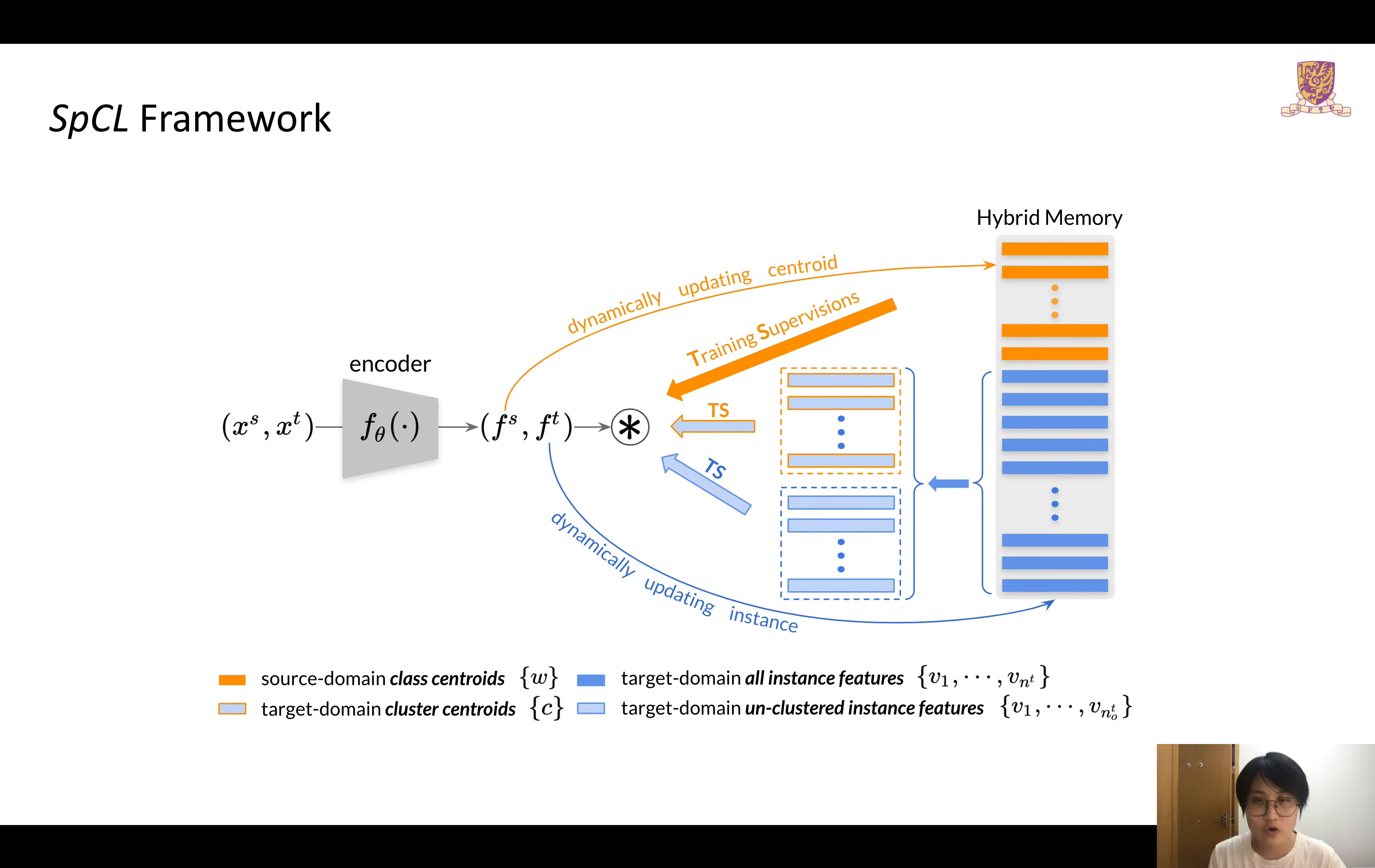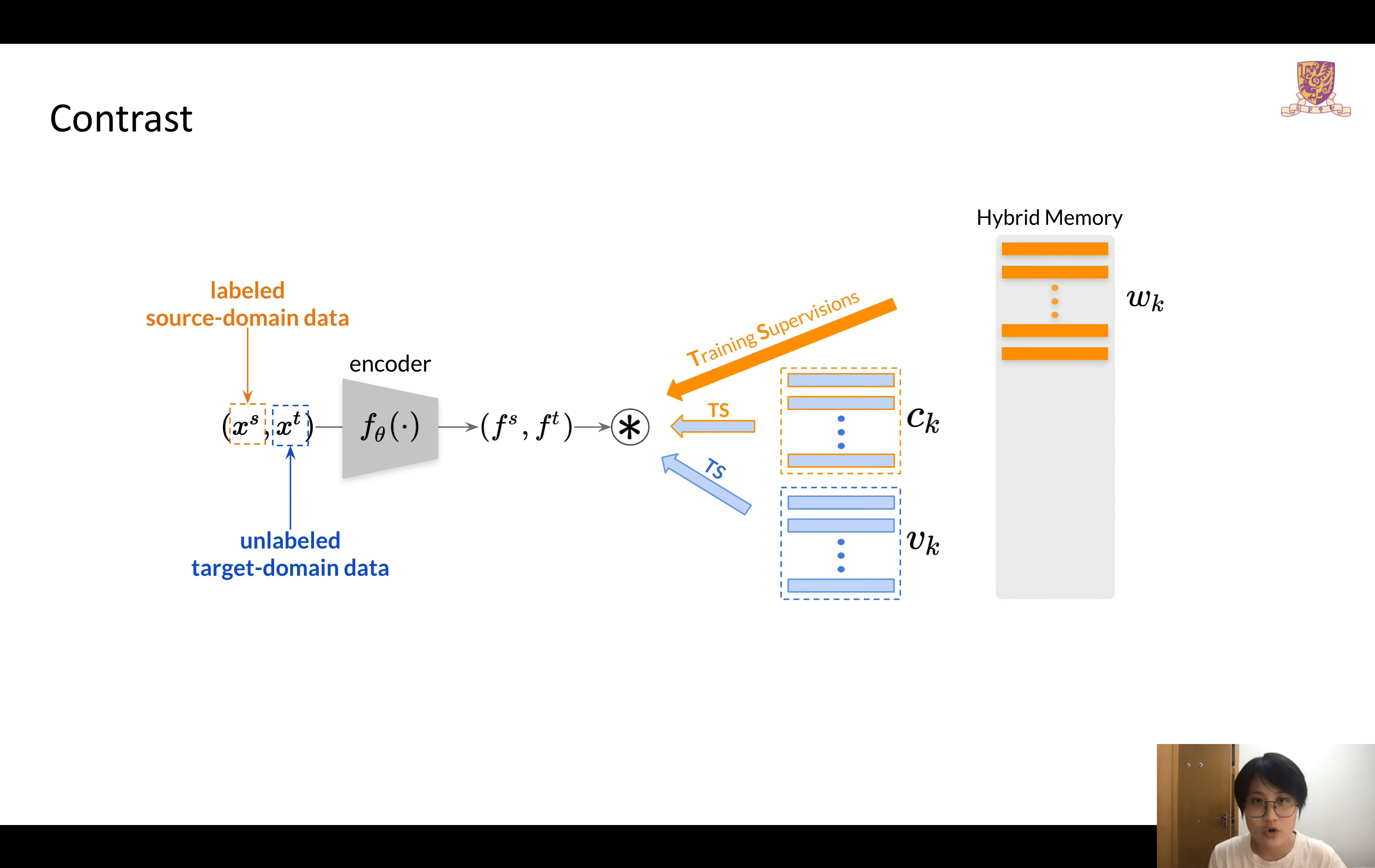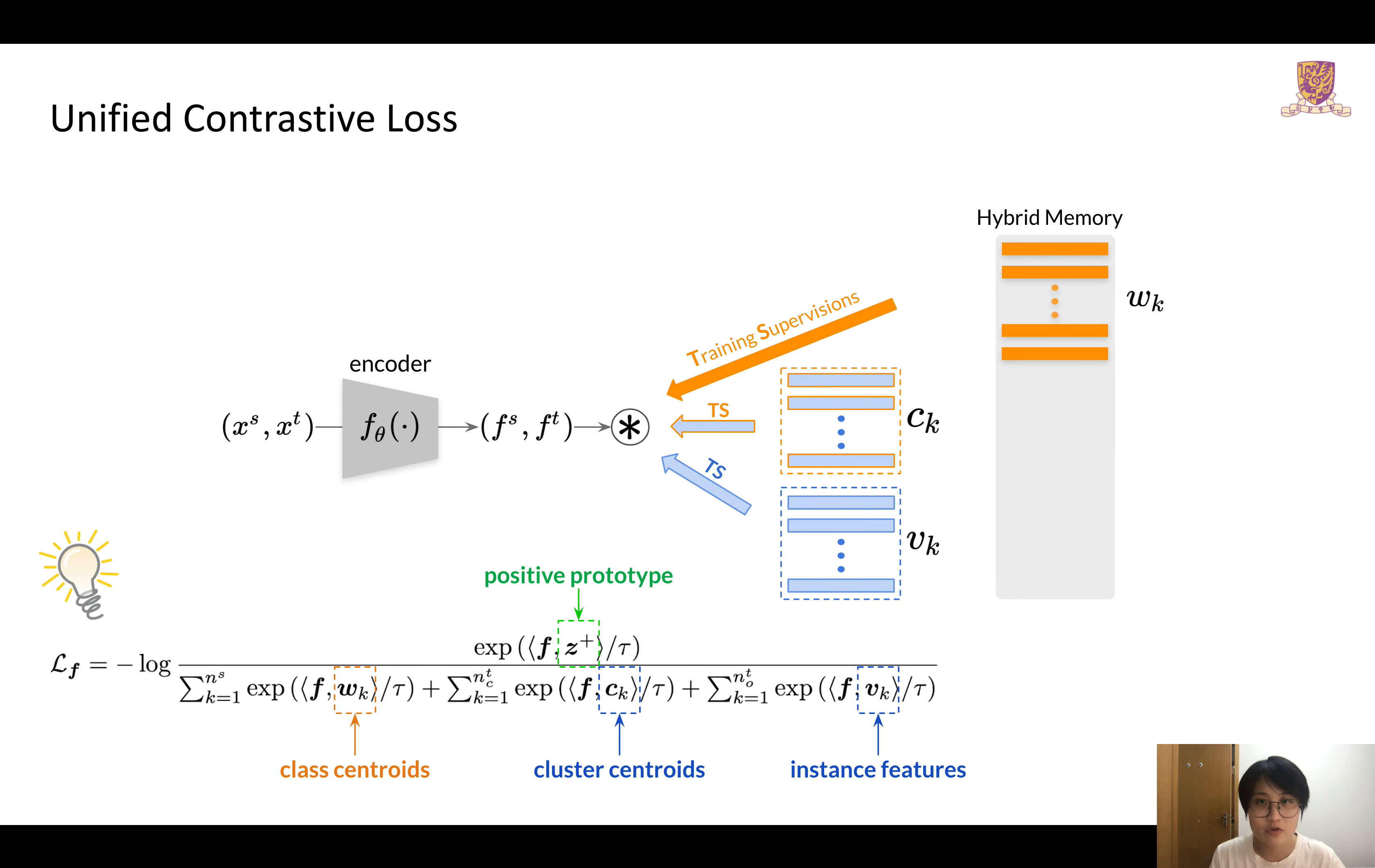Here is the overall framework. We have three kinds of prototypes provided by the hybrid memory: source domain class centroids, target domain cluster centroids, and target domain unclustered instance features. The encoded features from two domains need to contrast all the prototypes. A unified contrastive loss is adopted as the training objective.